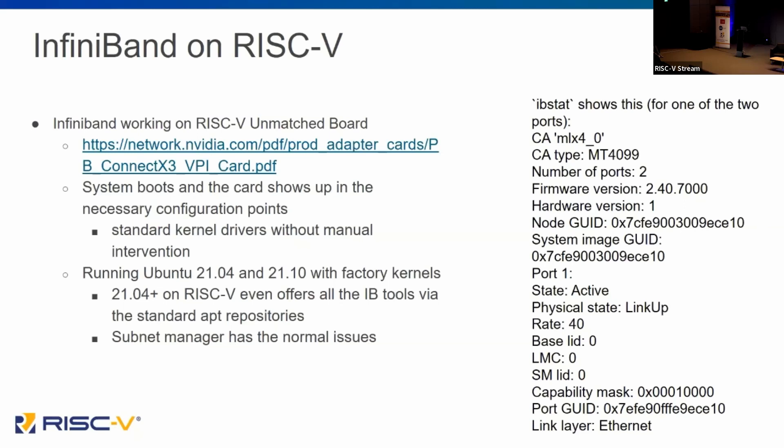The great thing is, as you would expect, you still have the same subnet manager issues that you have in a normal IB environment. What I'm showing here on the right is the IB stats showing information about the ConnectX-3 card. That's exciting to see an older version of the card actually working and giving you InfiniBand in the system — providing a canonical, traditional, familiar infrastructure for a RISC-V networking stack.